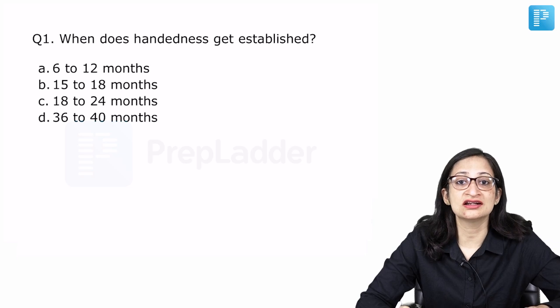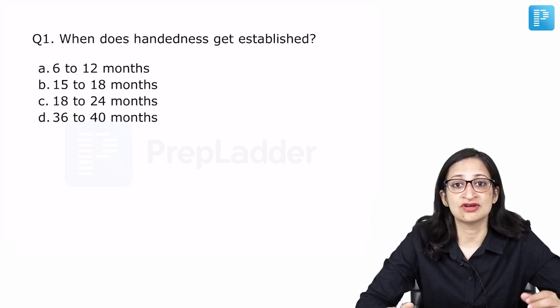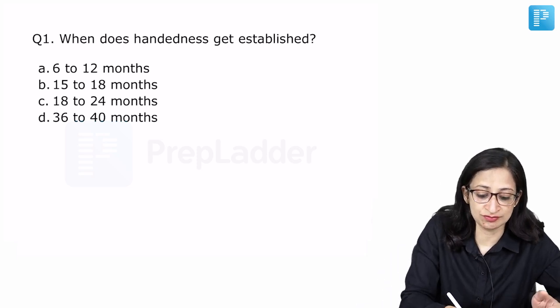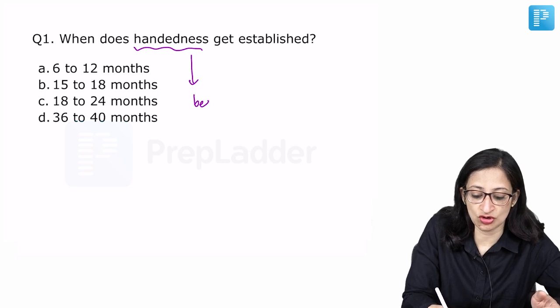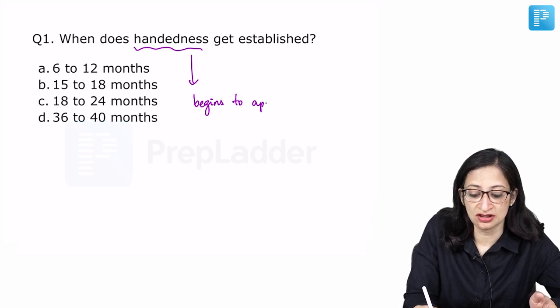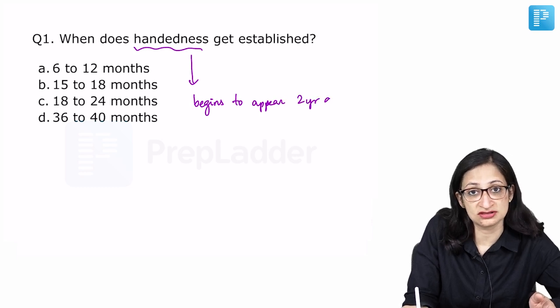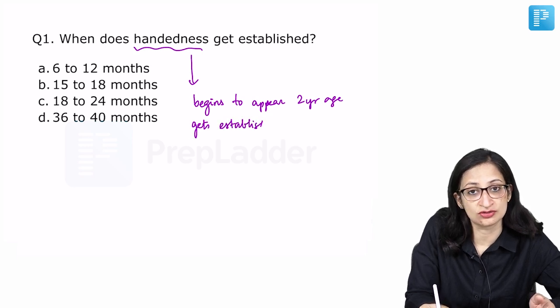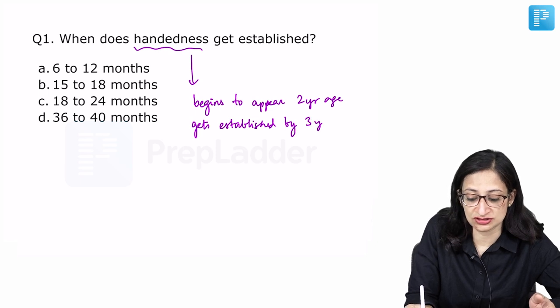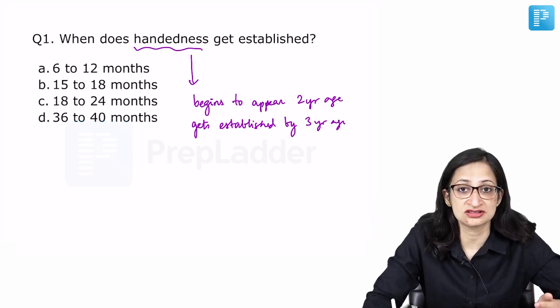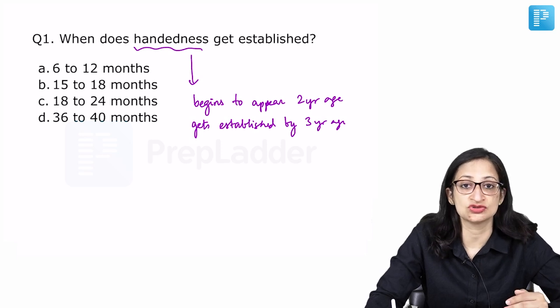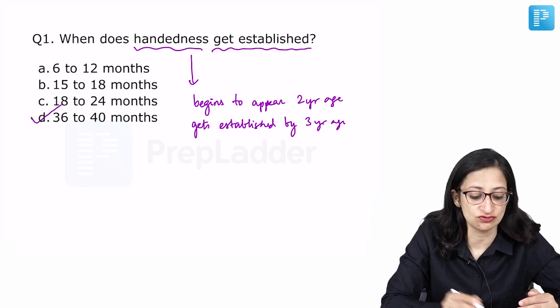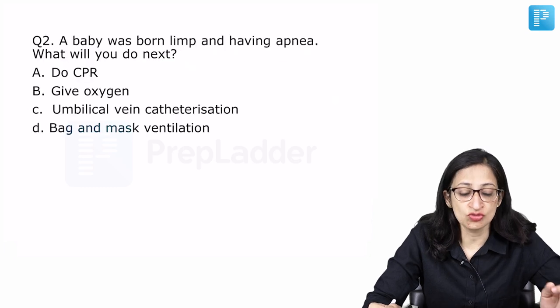The first question: when does handedness get established? Handedness means whether the child is a right handed person or a left handed person. This handedness begins to appear by 2 years of age, that means 24 months, and gets established by 3 years of age, that is 36 months. You can appreciate out of the given options that is 6 to 12 months, 15 to 18 months, 18 to 24 months. As the question is asking when does the handedness get established, our best answer will be 36 to 40 months which is closest to the 3 years.